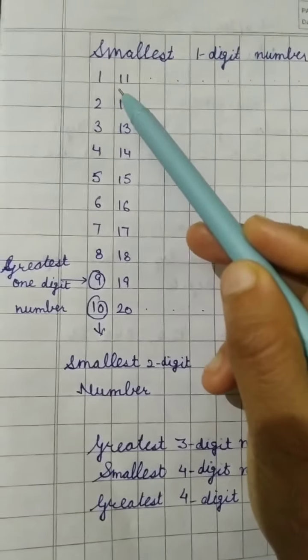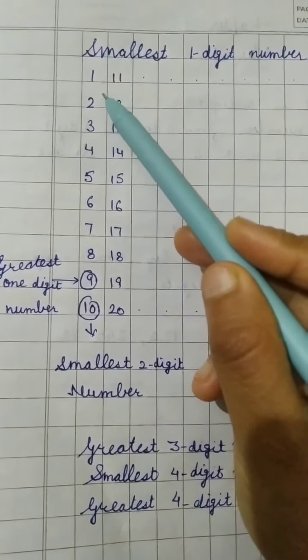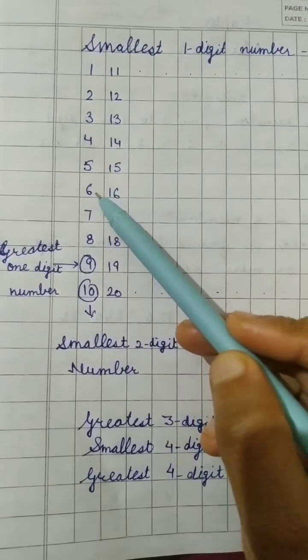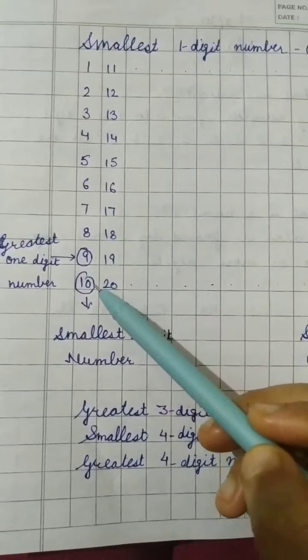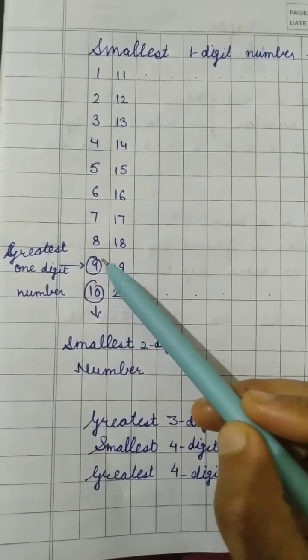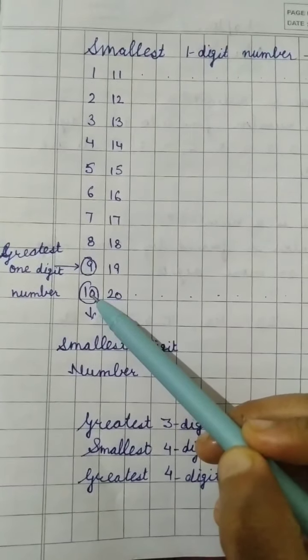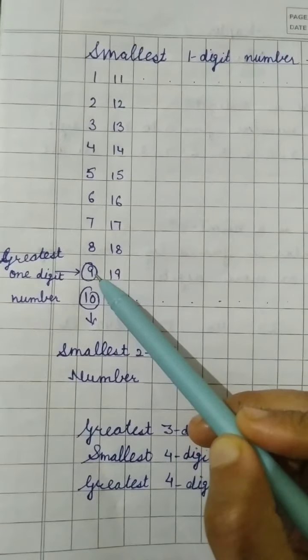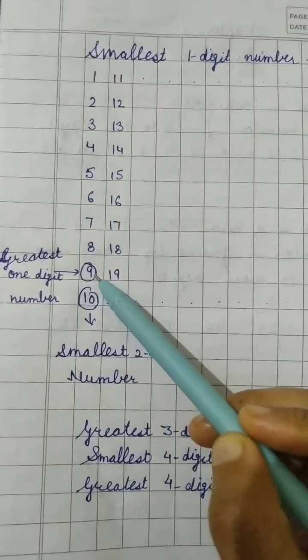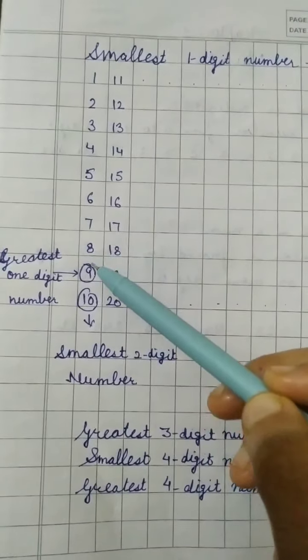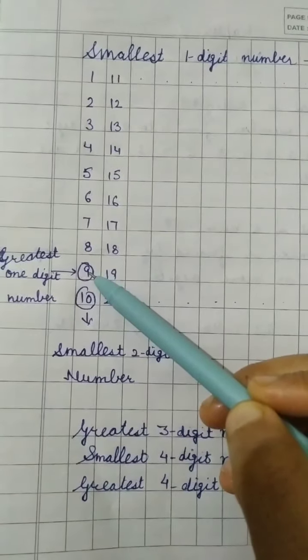So see children here when we write counting 1, 2, 3, 4, 5, 6, 7, 8, 9 and then is the 10. Here after 9 this is a single digit number. After 9 the two digit number starts. So this is the greatest one digit number out of all these digits. So 9 is the greatest one digit number.